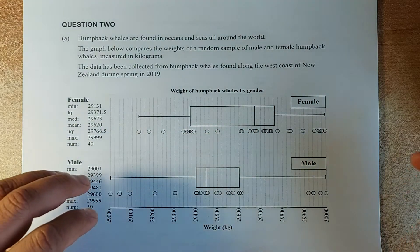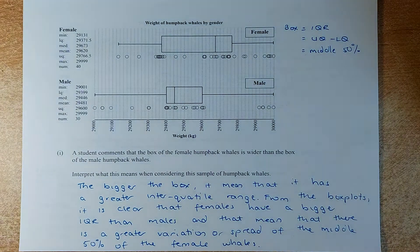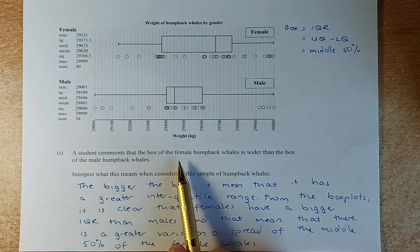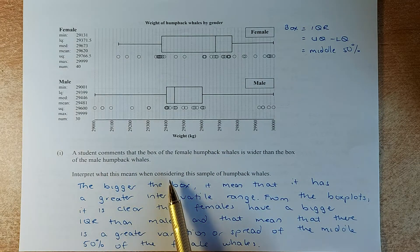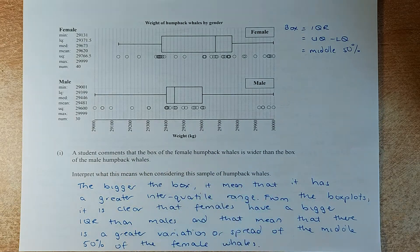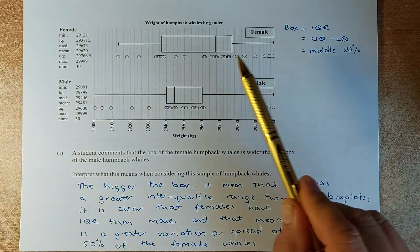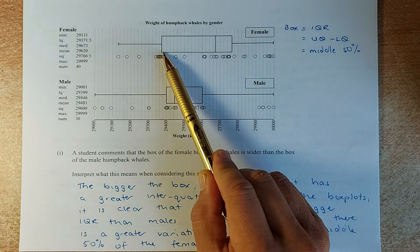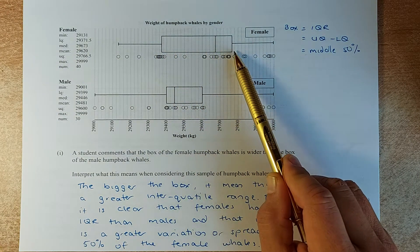So let's tackle the question now. The first question asks you: A student commented that the box of the female humpback whales is wider than the male. Interpret what this means when considering this sample of humpback males. So this box here represents the interquartile range. This is the lower quartile, this is the median, this is the upper quartile.